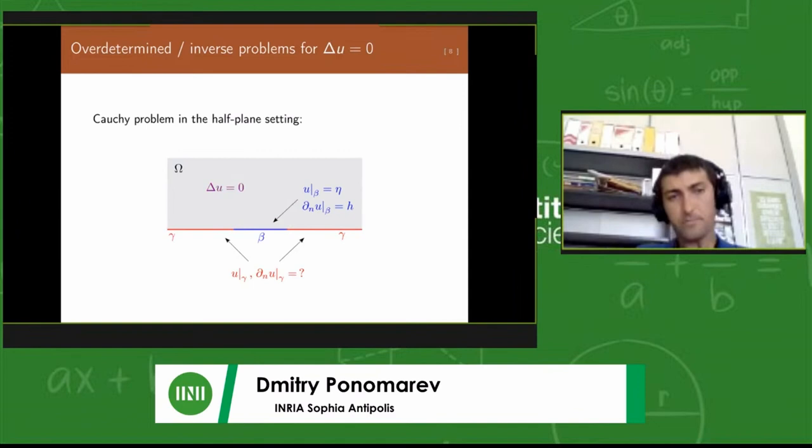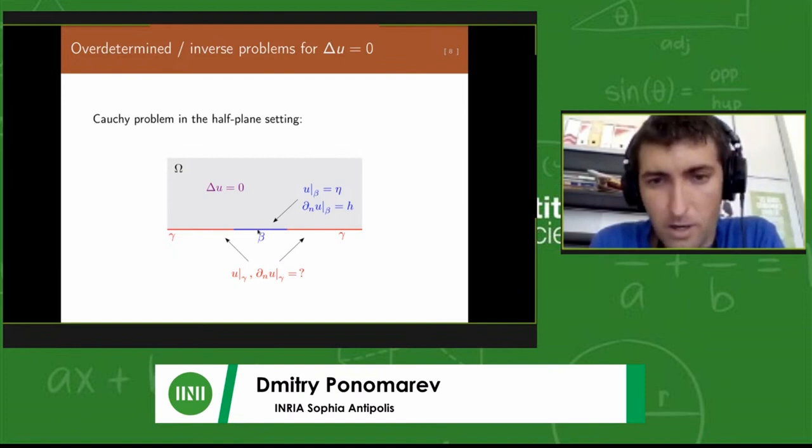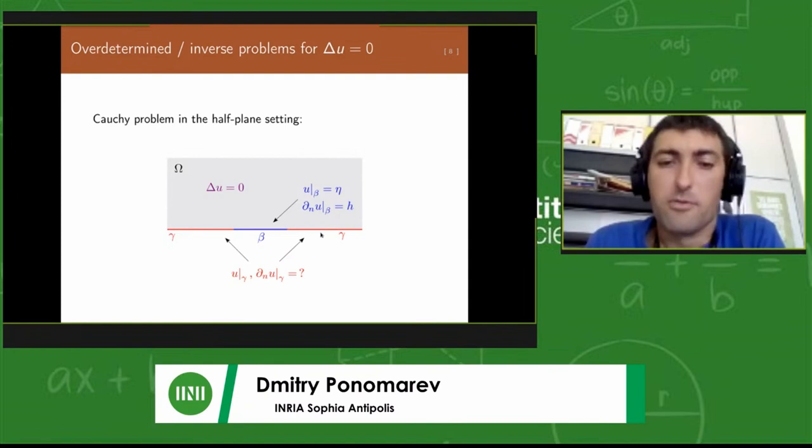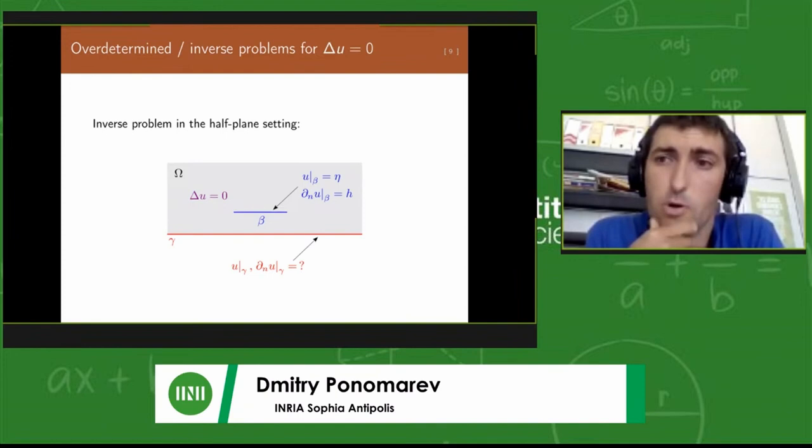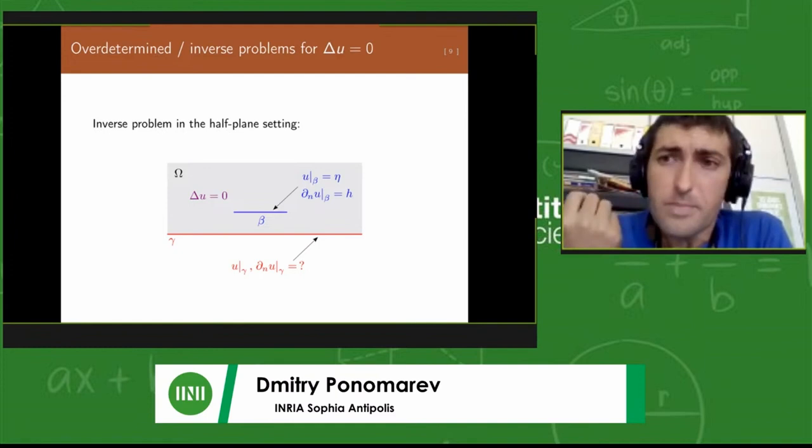In unbounded domains, like half-plane settings, the situation is very much similar. Again, on beta we have overdetermined data, and on gamma we have nothing. This half-plane setting can also be modified a little bit. For example, this is the case in some experimental setups.